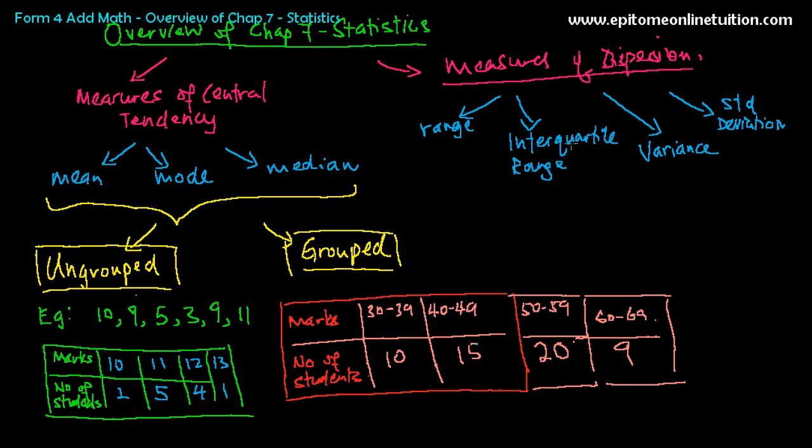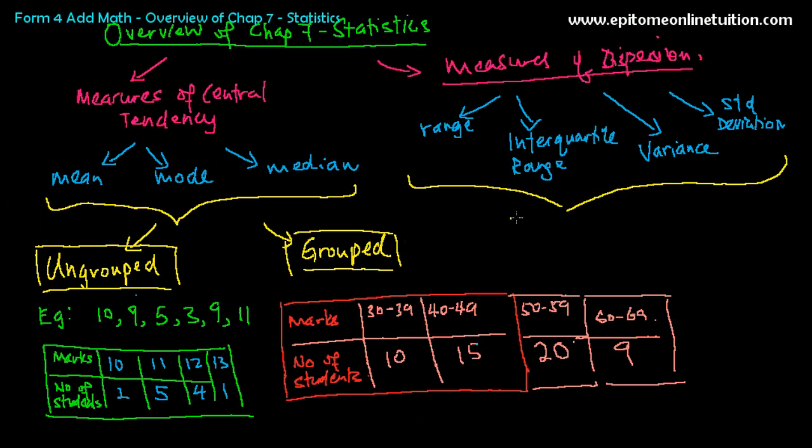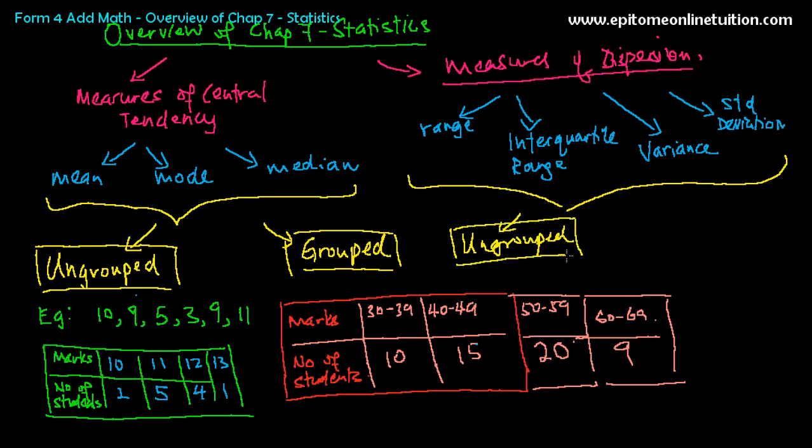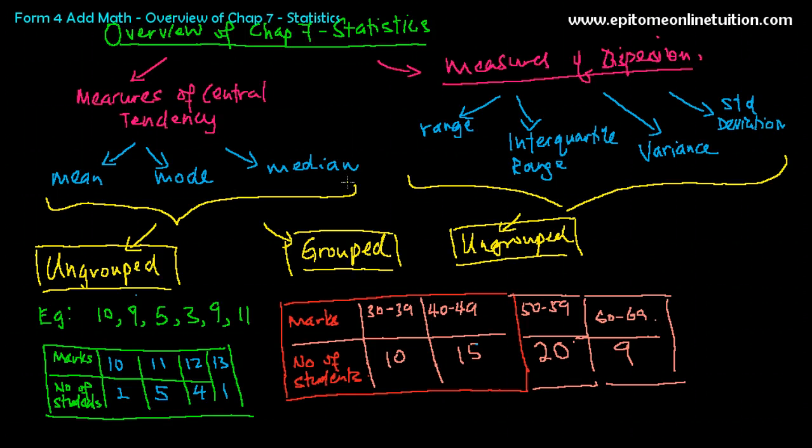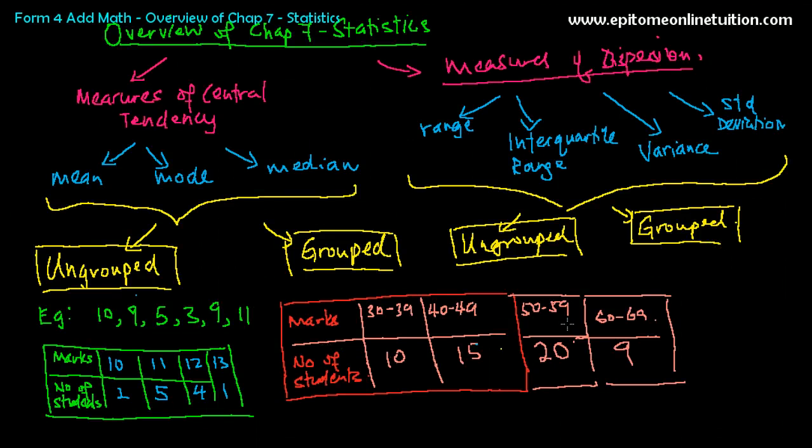They have different meaning. These are the four things that you will have to find, and you will have to find them from grouped and ungrouped data as well. From the same data, you will be asked to find measures of dispersion. From one group of data, you can find seven things, actually: Mean, Mode, Median, Range, Interquartile Range, Variance, and Standard Deviation. You can be asked to find any one or two of these things. So the set of data can either be grouped or ungrouped.